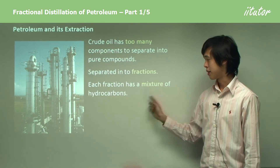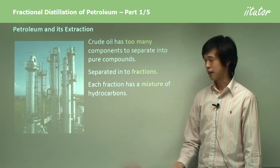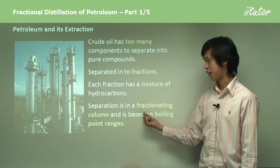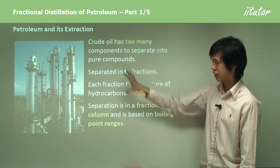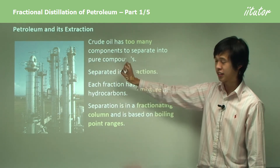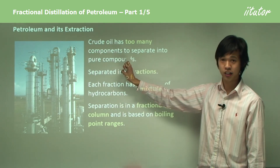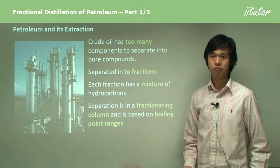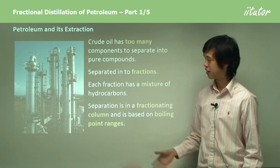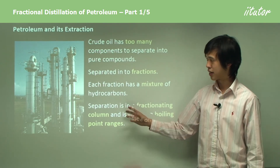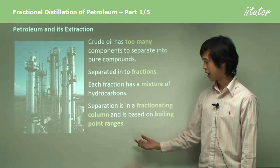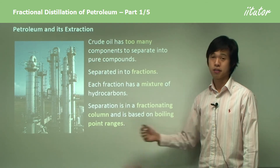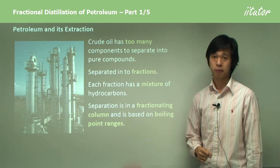Each fraction has a mixture of hydrocarbons. The separation is done in a fractioning column — here we have an industrial fractioning column, and as you can see, it's a very modern and impressive piece of machinery. All it does is separate the fractions based on boiling point.